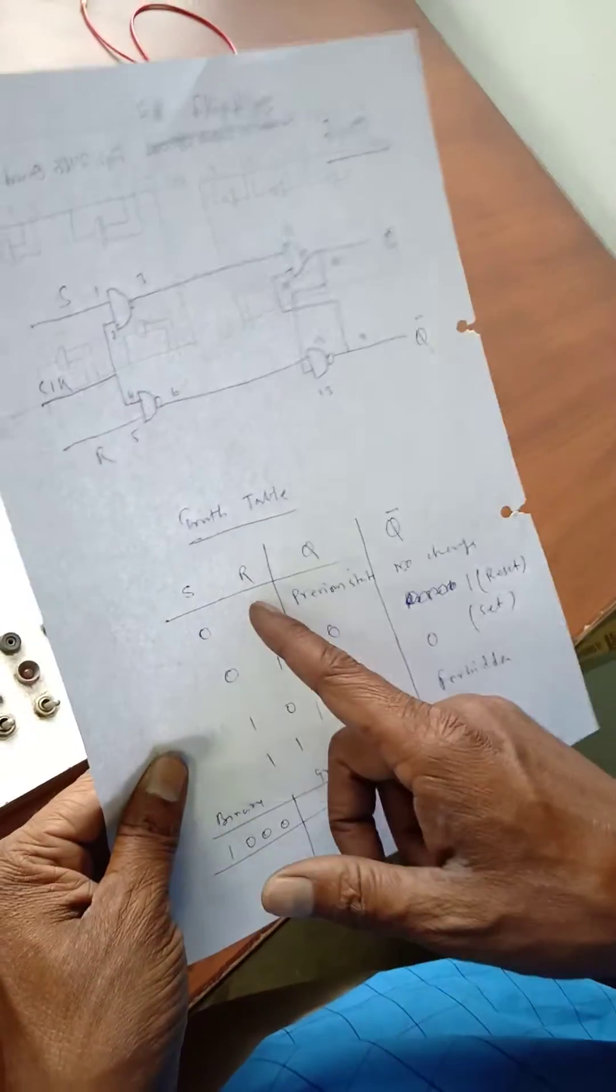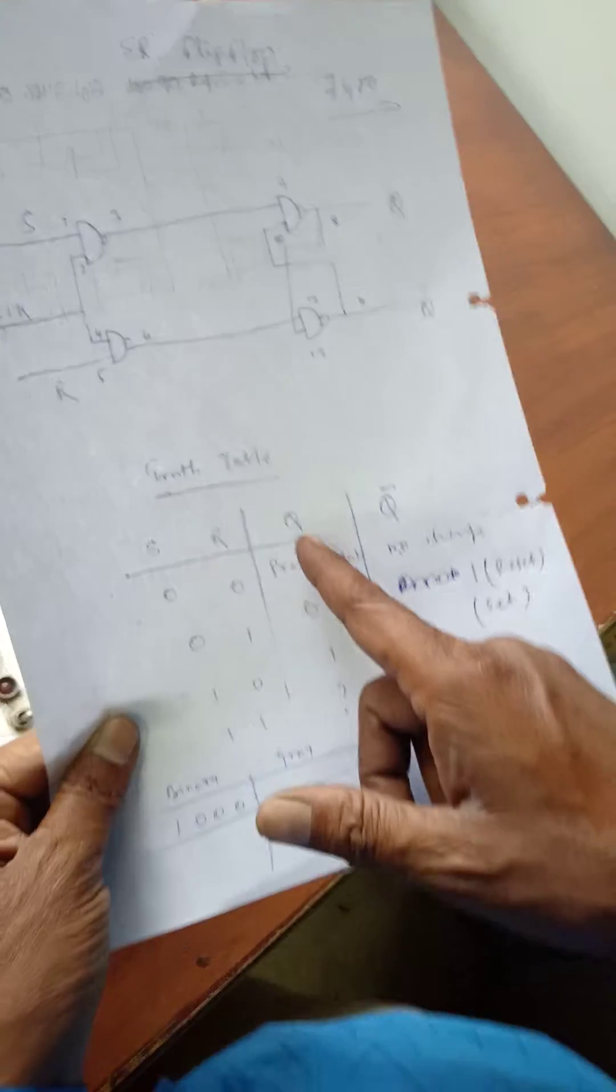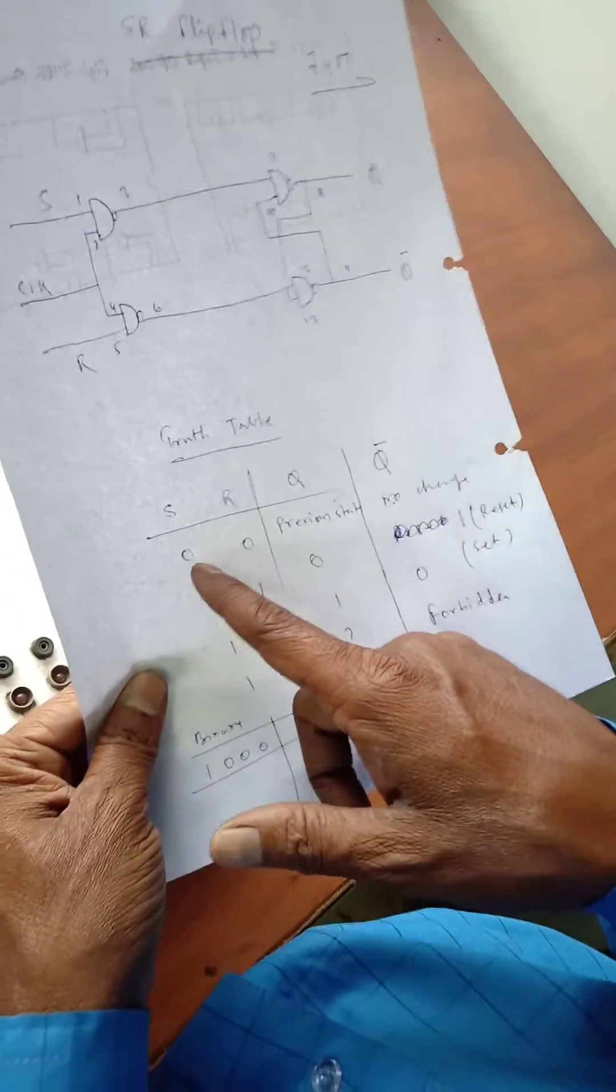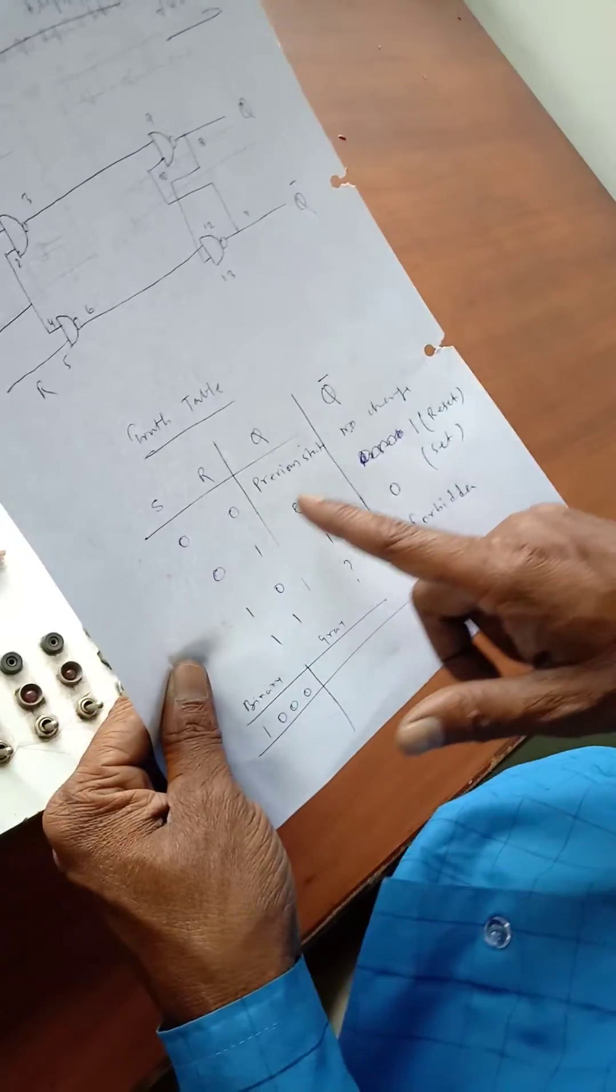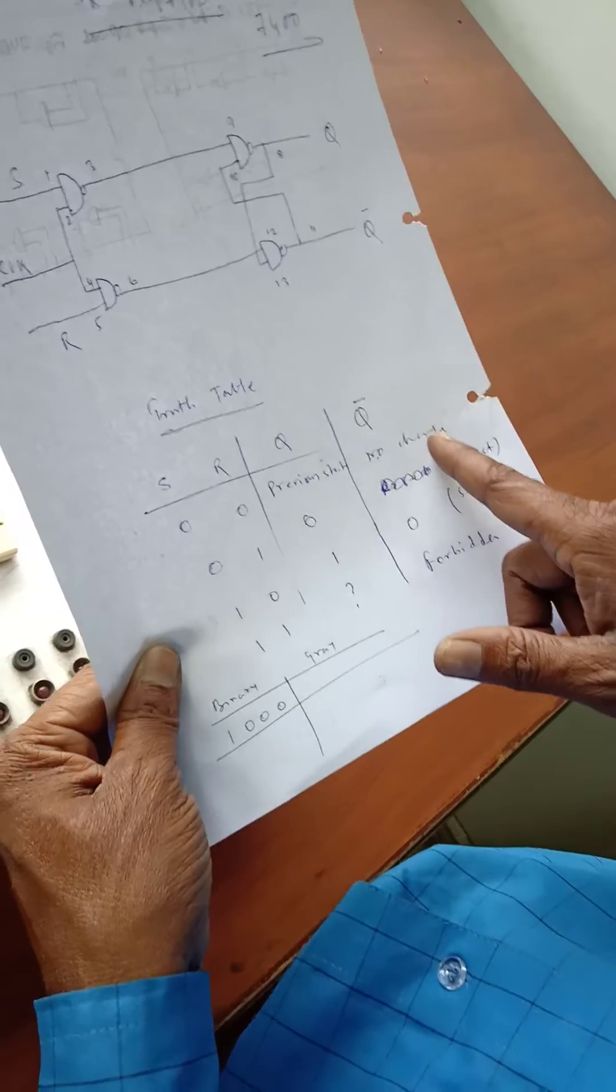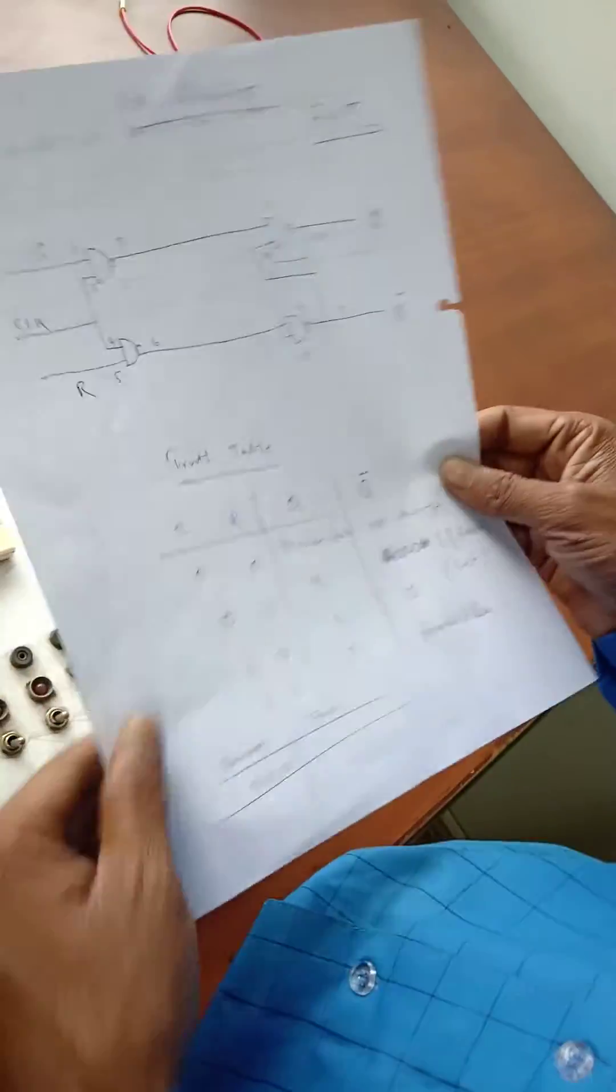And this is the truth table: S, R, and this is the normal output that is Q and corresponding complemented output here. So if you give the signal S=0, R=0, Q will be previous state, and that means no change in your complement output. So just turn on the circuit.